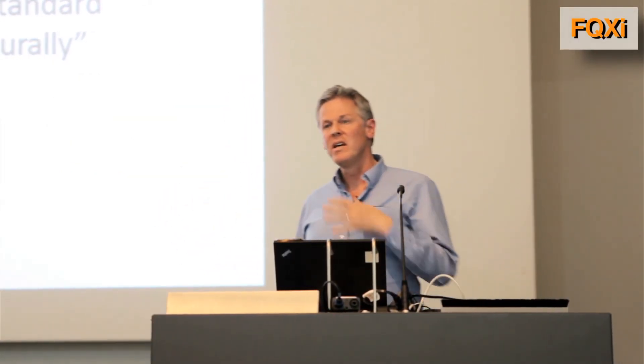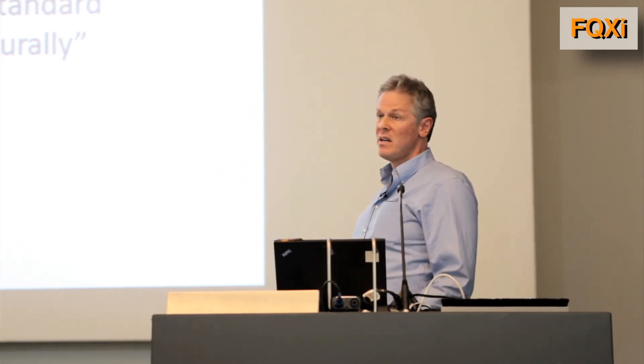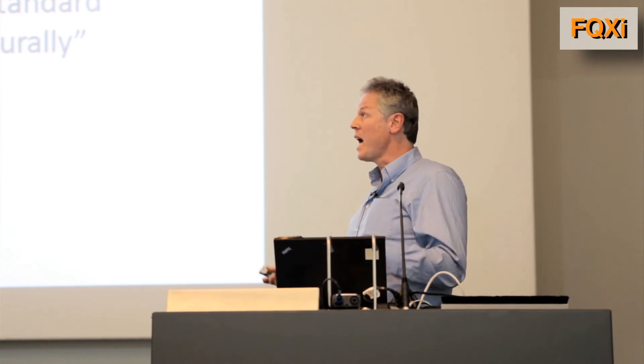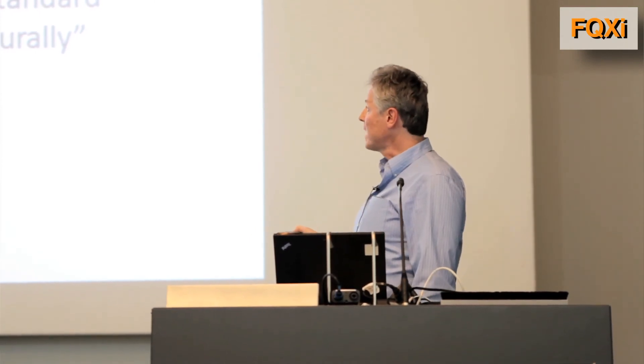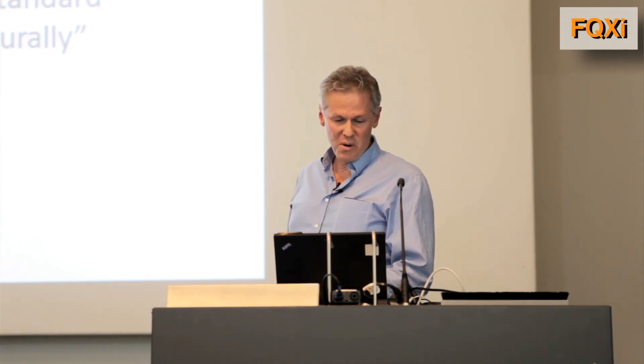Once you include gravity in your calculation, homogeneity, in other words the opposite of gravitational collapse, is a low entropy state. And that's how the past hypothesis is realized in the universe as we know it.